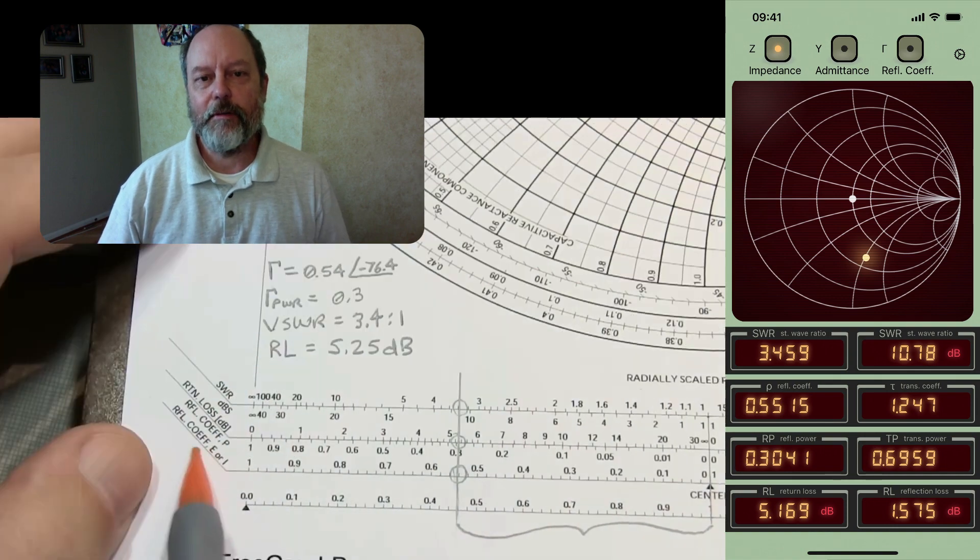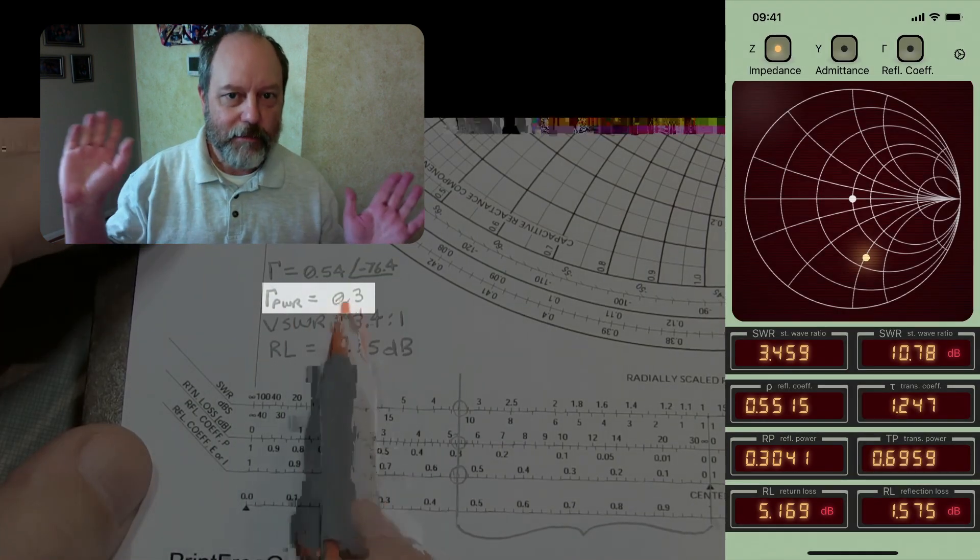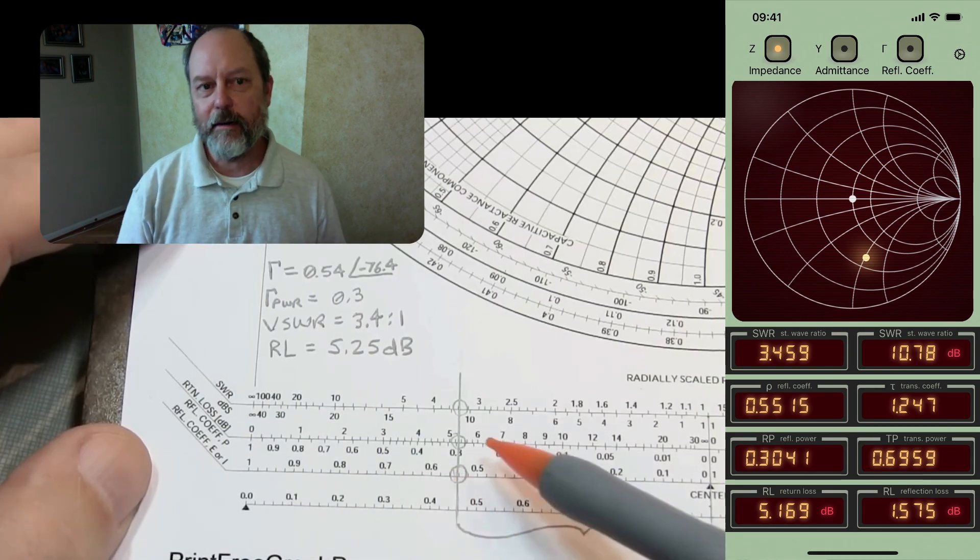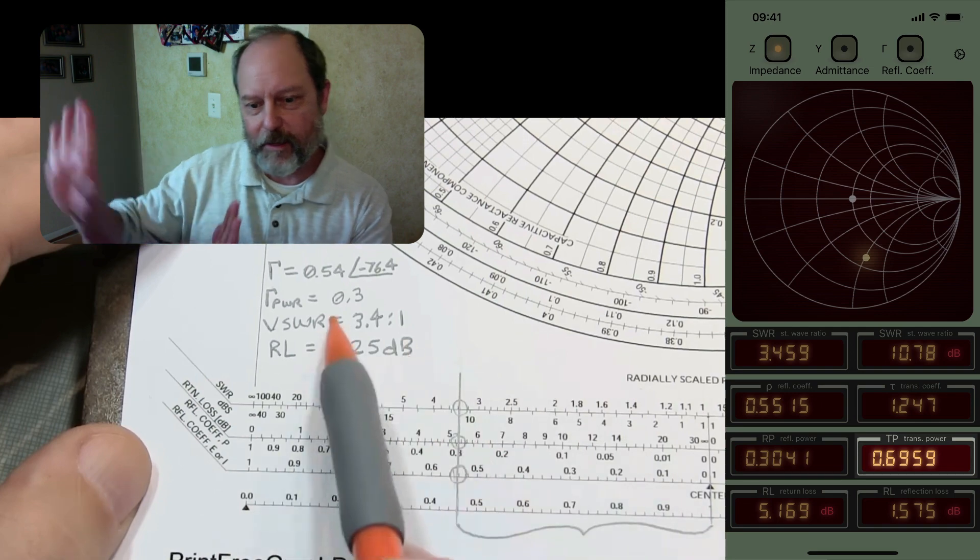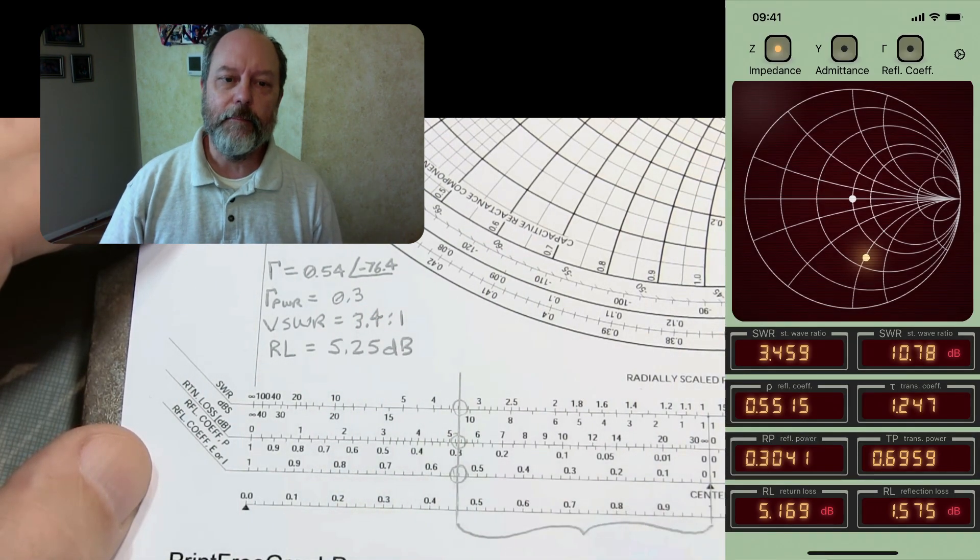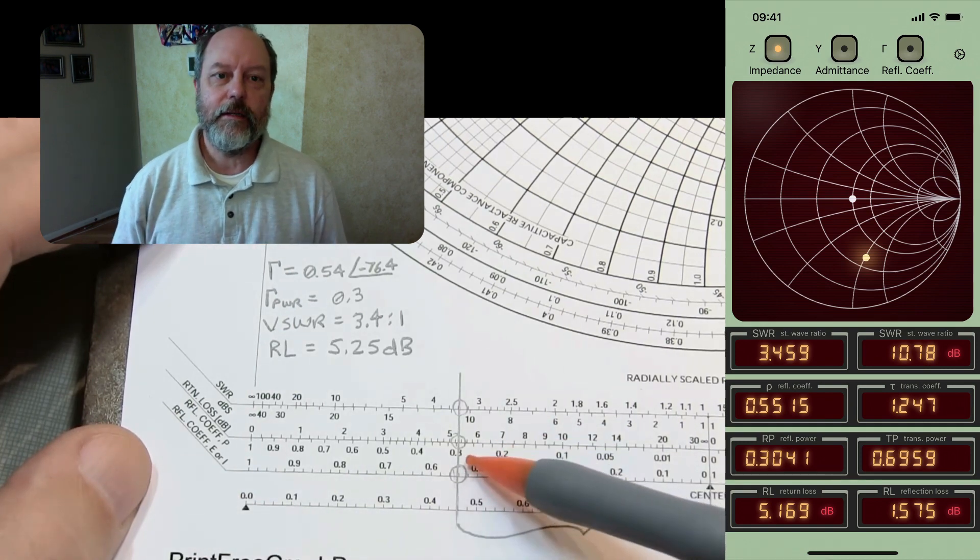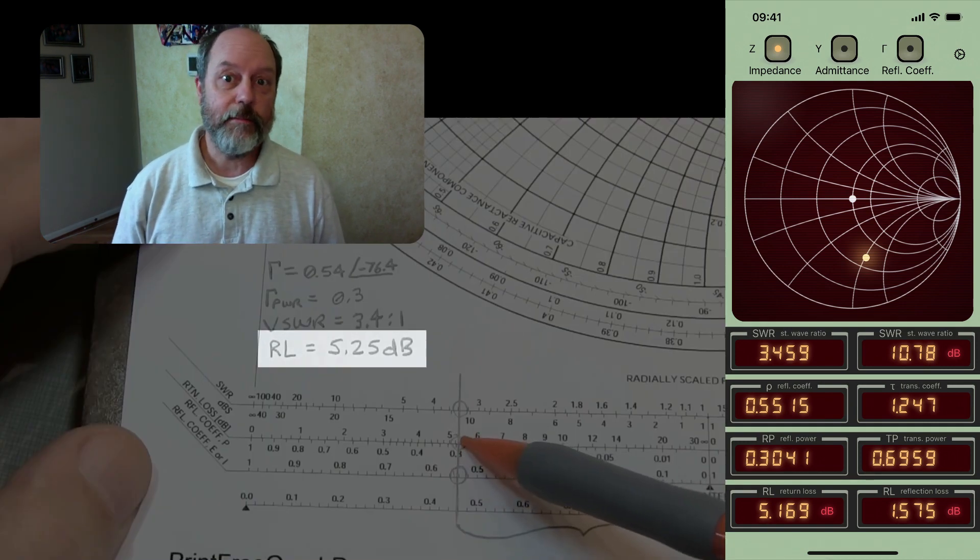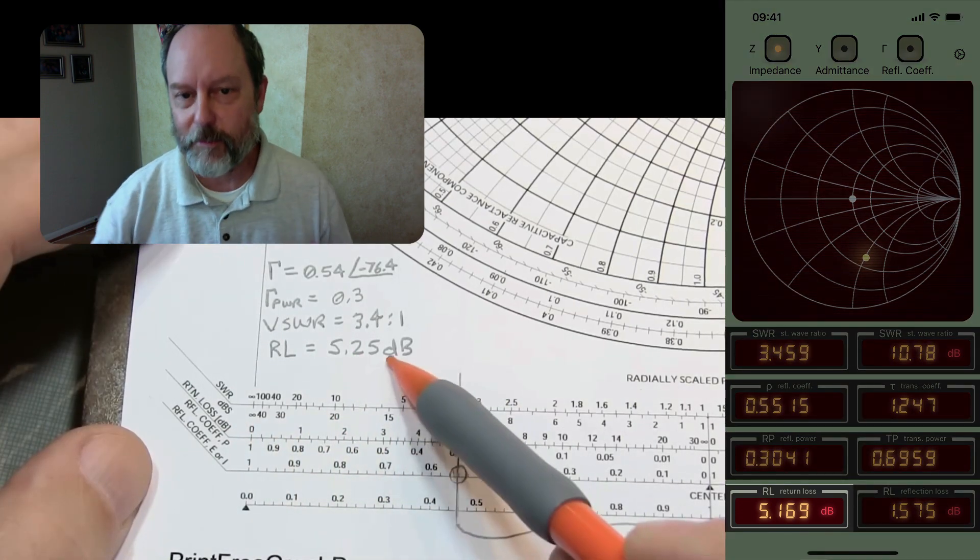We can also see that the power reflection coefficient is 0.3, which means that 30 percent of the power is reflected, as Alan talks about. And you can also see the transmission coefficient in the same view in the app, showing that 70 percent of the power is transmitted. You can see that the return loss calculated is 5.25 dB in Alan's video, and it's about 5.2 in the app. It's pretty much the same stuff.